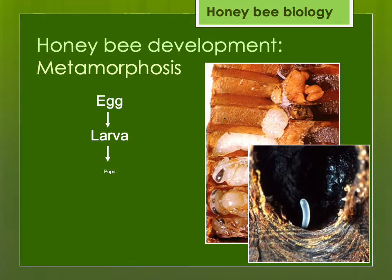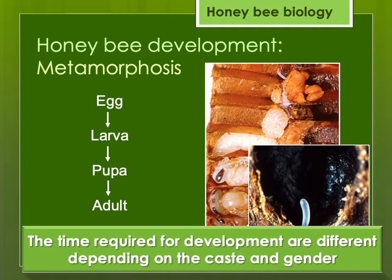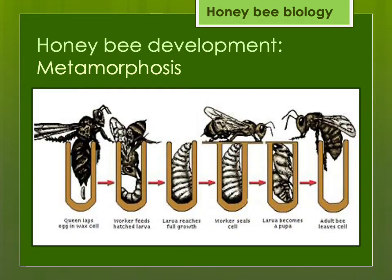Like other insects, honey bees develop from an egg, which then hatches into a larva, which then pupates and eventually emerges as an adult. The time required for development differs depending on the type of bee — worker, queen, or drone. What happens is the queen lays an egg into one of the cells in the comb. Nurse bees feed the hatched larva. Eventually it reaches full growth, a worker seals its cell off, the larva becomes a pupa, and eventually emerges as an adult bee.